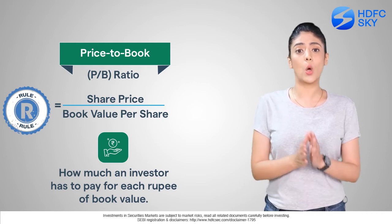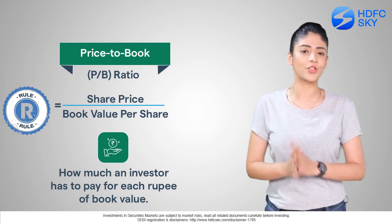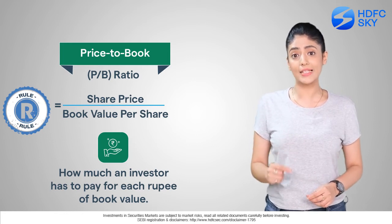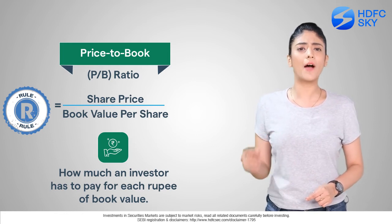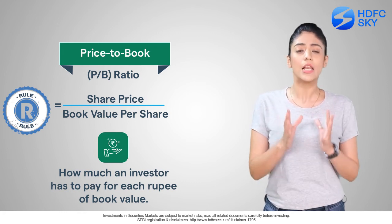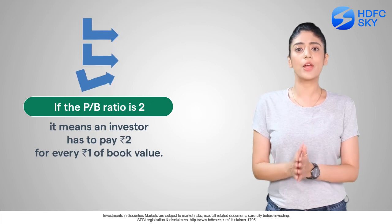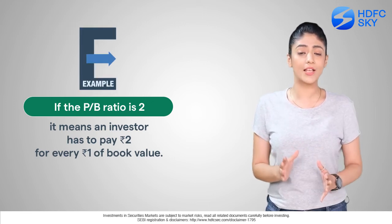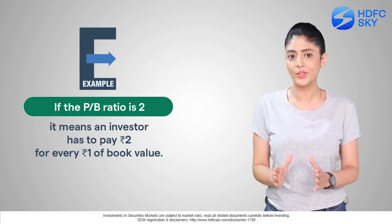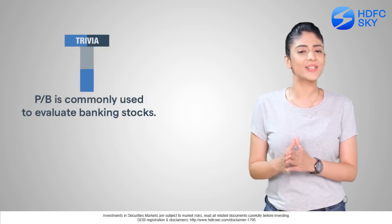Number eight: Price to Book, yani PB. Price to Book ratio compares a stock's current market price to its book value per share. The book value of a company is equity minus liabilities — what the final worth of the company would be if it were liquidated. For example, a PB ratio of 2 means an investor pays 2 rupees for every 1 rupee of book value. PB is commonly used to evaluate banking stocks.